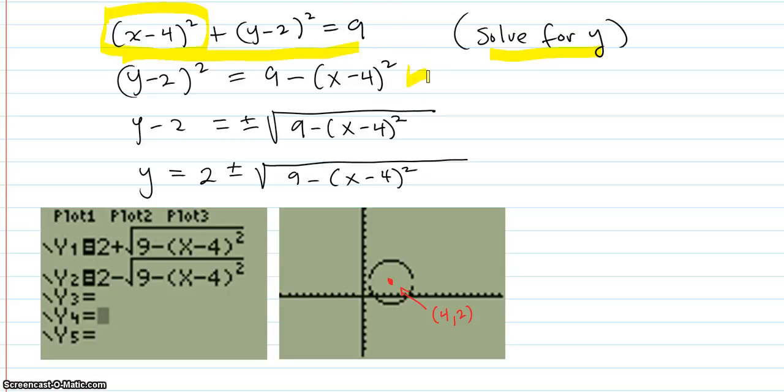Then you have to take this plus or minus square root of both sides. So now you're here. Then you have to add the 2 over, so you get this. Then you just put each one of those into the calculator, this one and this one.